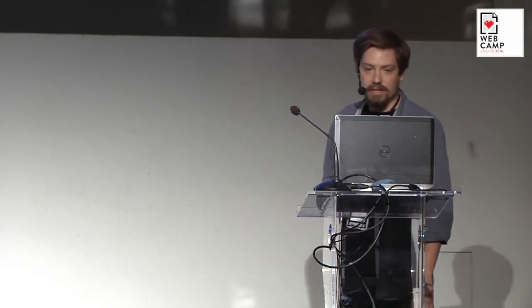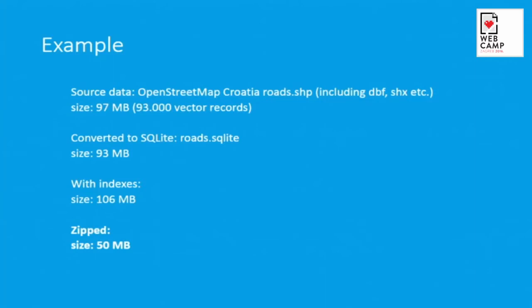But there are some difficulties how actually you could render and process the databases on mobile phones because it's limited hardware. So you need to think about optimizations. Here is one example. It's an OpenStreet map of Croatia. So the entire road network of Croatia, if you download it today from OpenStreet, it's around 97 megabytes in a shapefile, a standard GIS format. So if you convert it to SQLite, you get a similar amount of data. But then you need to build indexes because you want to query the data quickly. Then it adds up around 106. But then if you zip it, and you will zip it if you will ship it on a phone, it's only 50 megabytes. So you get the entire road network of Croatia for a 50 megabyte requirement to download it to the phone. So it's really compressed.